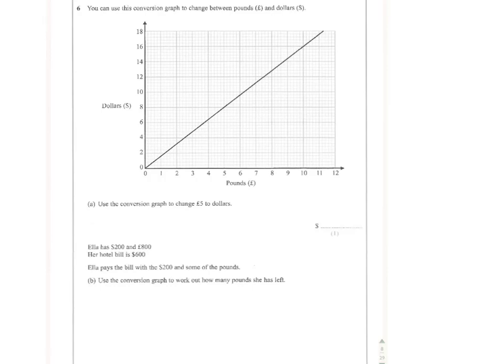We can use this conversion graph to change between pounds and dollars. To do that, we need to be clear on what each square going across and up represents. On the pounds axis, we can see there are five squares for one pound, so each one is going to be worth 0.2 of a pound or 20 pence.